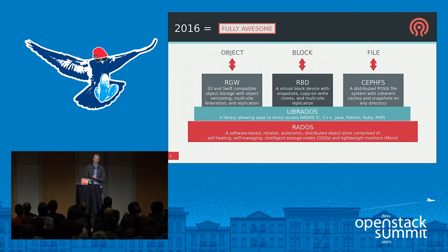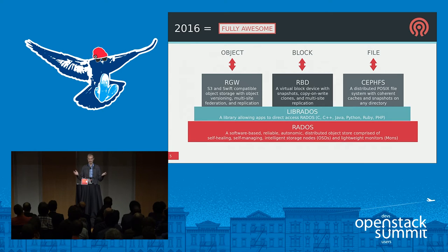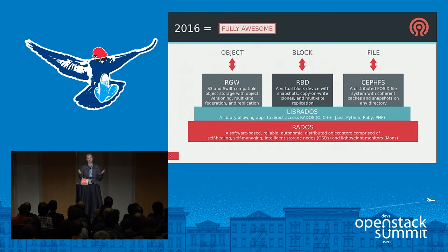Ceph gives you a unified storage platform. The RADOS Gateway provides S3 and Swift compatible object storage with object versioning, multi-site federation, and replication. The block interface RBD gives you a virtual block device with snapshots, copy-on-write clones, and multi-site replication across clusters for disaster recovery. CephFS is a distributed POSIX file system with scale-out metadata, coherent client caches, and snapshots in every directory — all built on top of the RADOS distributed storage platform, which is self-healing and self-managing.